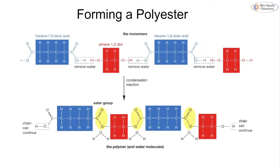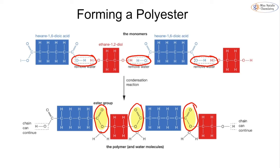We can look at a different polyester using hexane-1,6-dioic acid and ethane-1,2-diol. Nothing changes in terms of the reaction: we still remove three sections of water and form three ester groups; we just draw the contents of the boxes alternating between red for alcohol and blue for acid — blue, red, blue, red continuing along the chain. Unlike addition polymerization where we break double bonds, here we form new ester bonds, lose water, and alternate two monomers throughout.